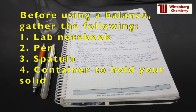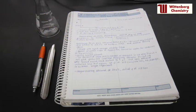You will need the following when using a balance: your lab notebook, a pen, a spatula, and a flask or beaker to hold the weighed solid.